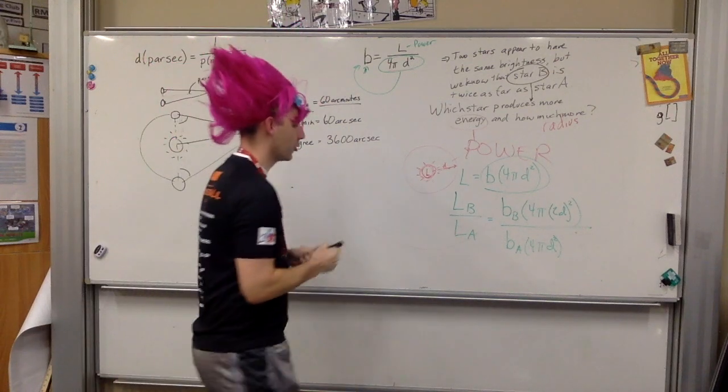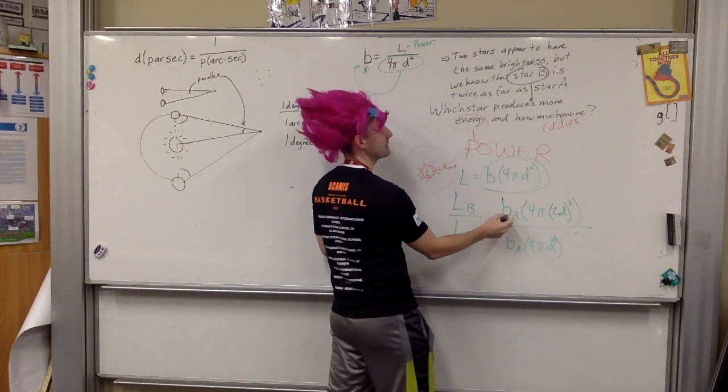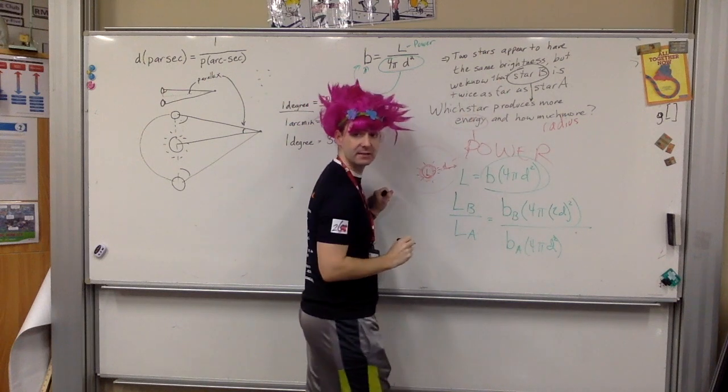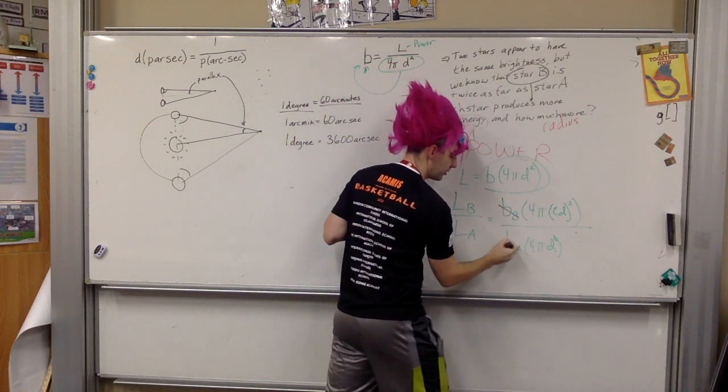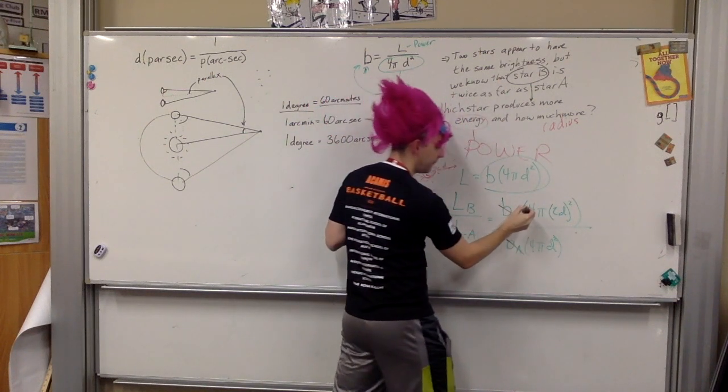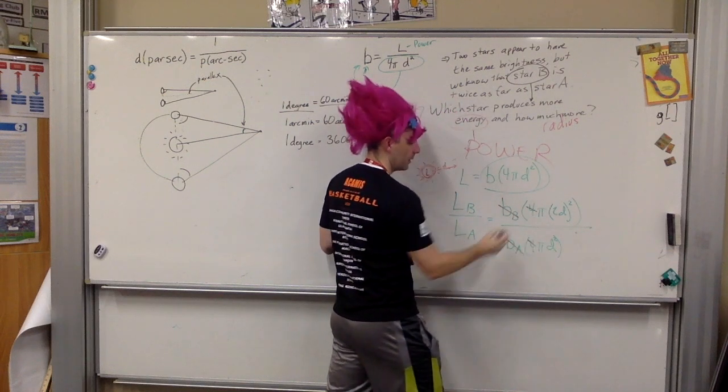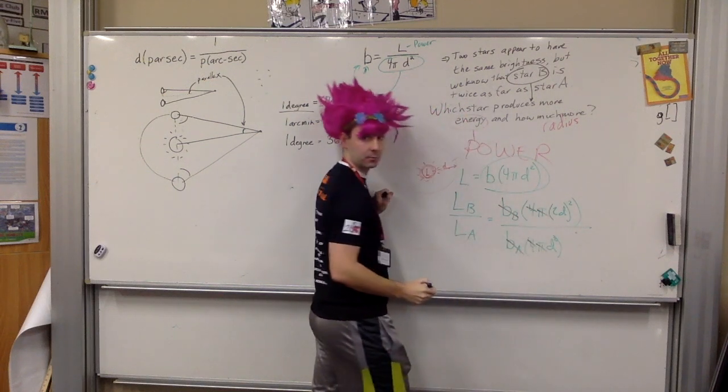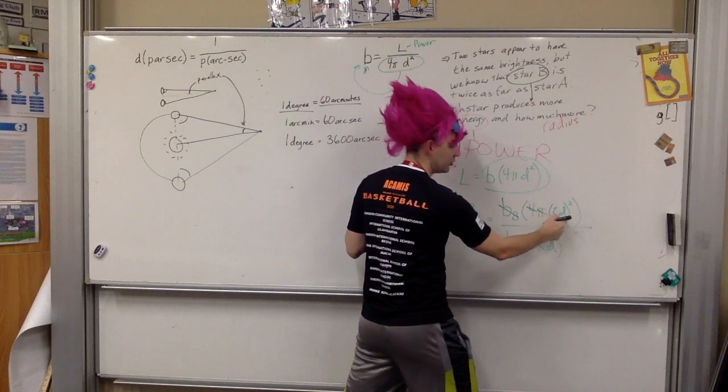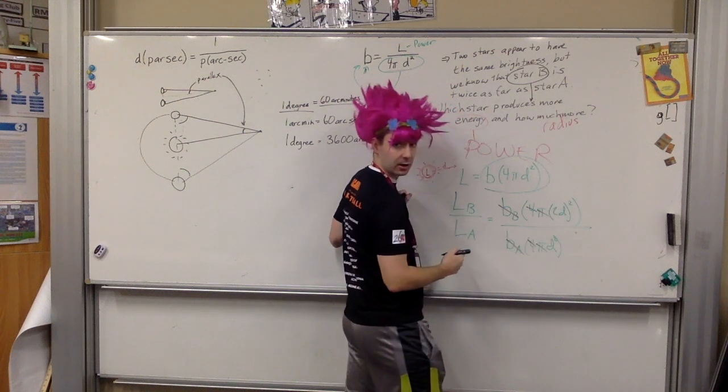Now, I should be able to just go through that and solve. So, we're going to go through and we say, well, the apparent brightness is the same because it says they appear to have the same brightness. So, those two are the same. Notice that the four is on top, four is on bottom. There's a pi on top, pi on bottom. And so, what I'm left with is 2d squared over d squared.